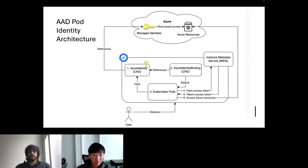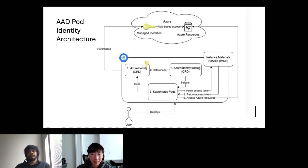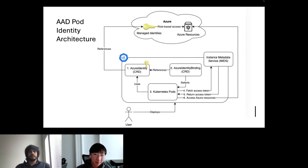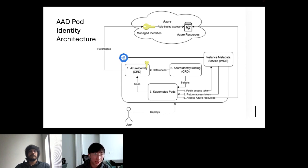Once the pod is created, AAD pod identity will assign the managed identity defined in the Azure Identity CRD to where the pod is scheduled. And once the assignment is complete, the pod can start accessing Azure resources with Azure SDK. Under the hood, Azure SDK will fetch an access token from the instance metadata service, or IMDS. That traffic is intercepted by AAD pod identity, which will make sure the token request is valid — that the pod requesting the access token is indeed using the managed identity it's supposed to use. This blocks any pods trying to use a different identity. After validation, IMDS returns the token to the pod, which can then access whatever Azure resources it needs.